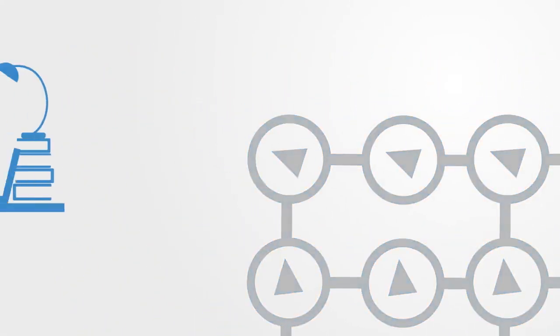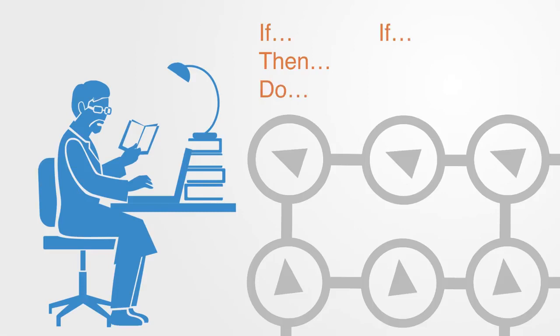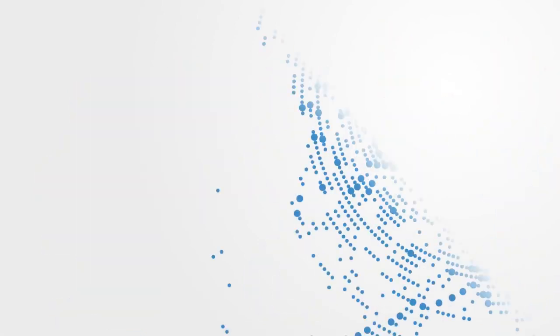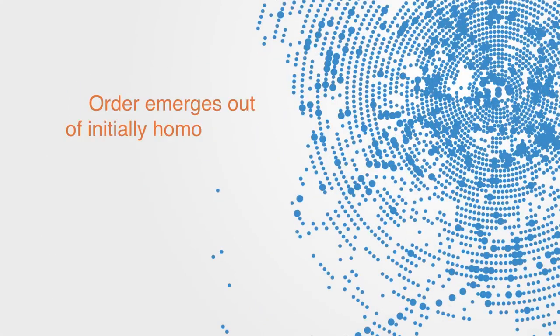Researchers try to model complex systems by capturing these local rules and using computational tools like agent-based modeling to try and simulate the process through which order emerges out of initially homogeneous or disordered states.